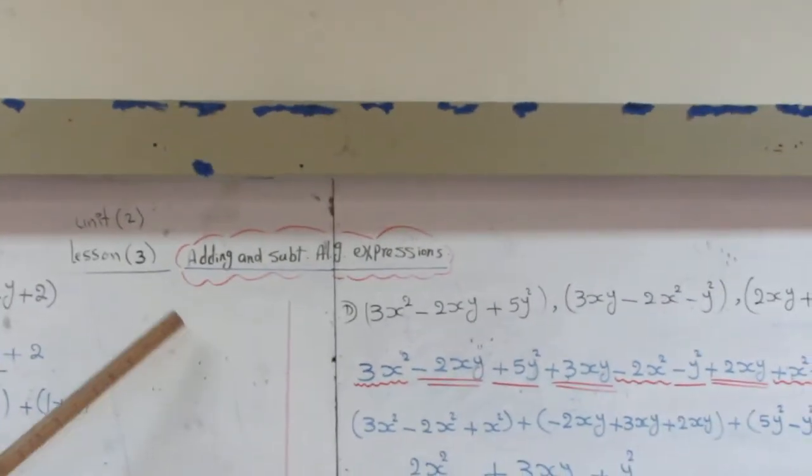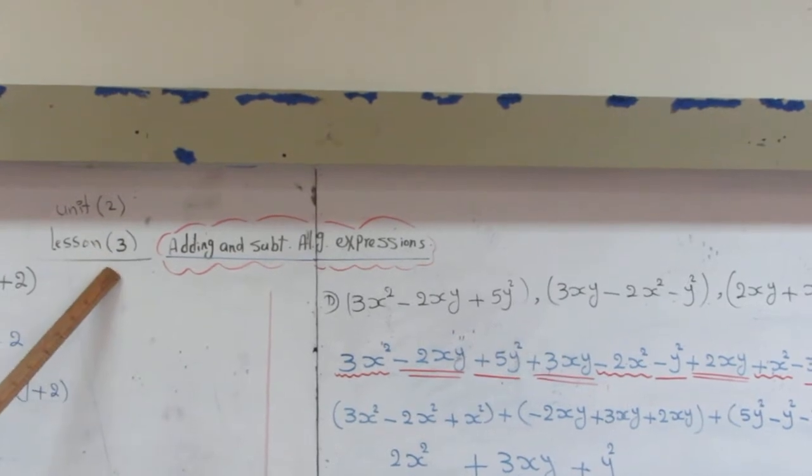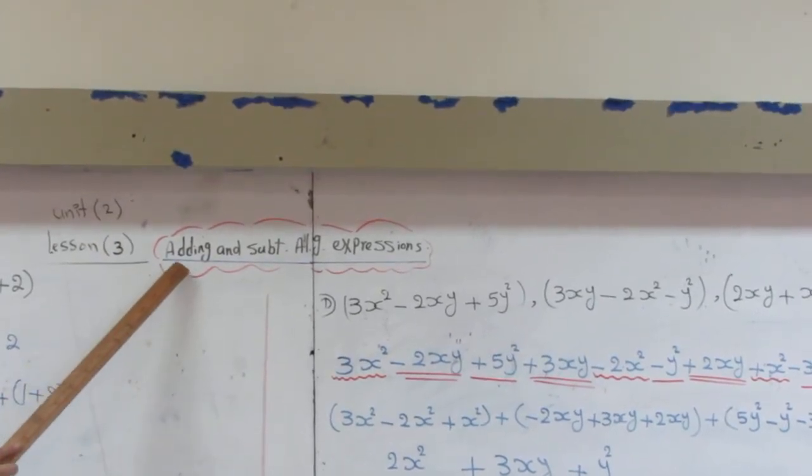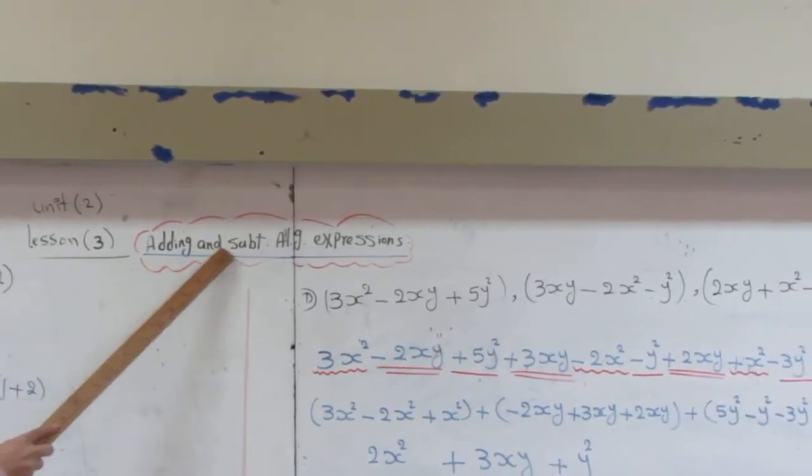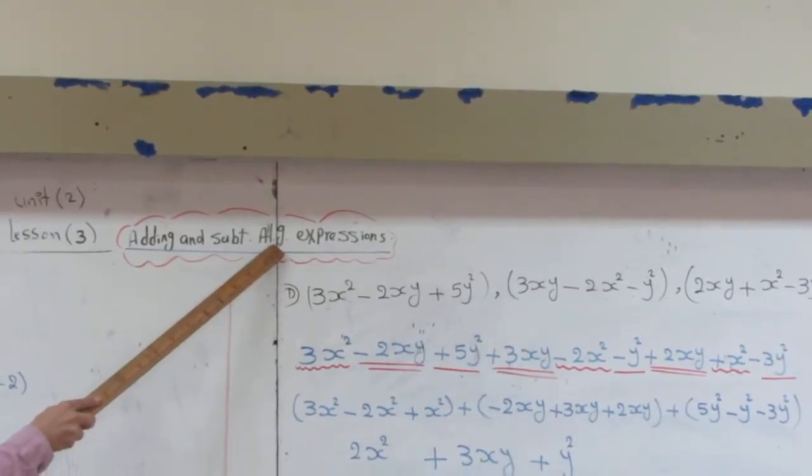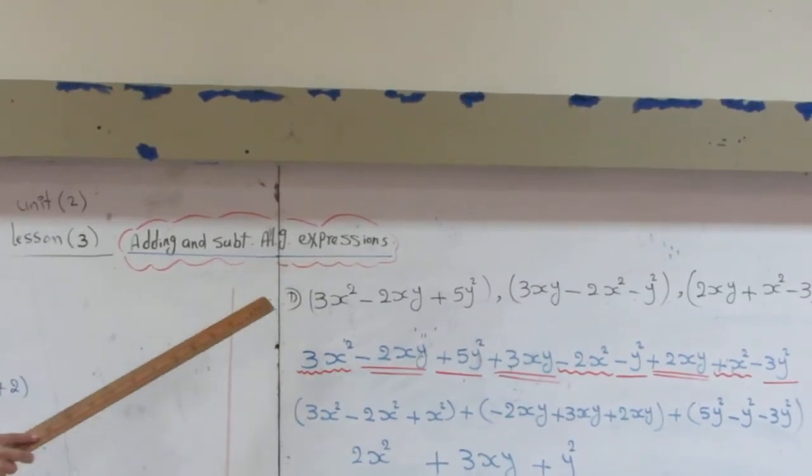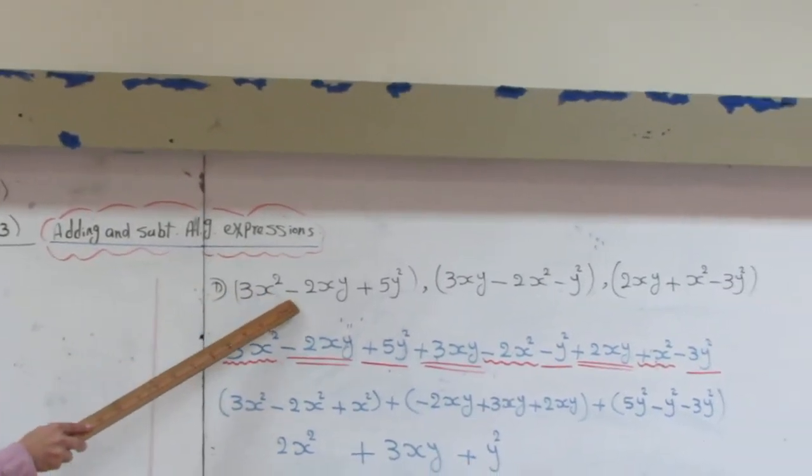Dear students, how are you? We are in unit 2, lesson 3. We will take something about adding and subtracting algebraic expressions. And we had before the definition of algebraic expressions. It consists of one or more terms, between them minus or plus.